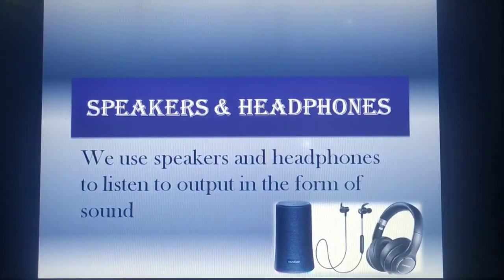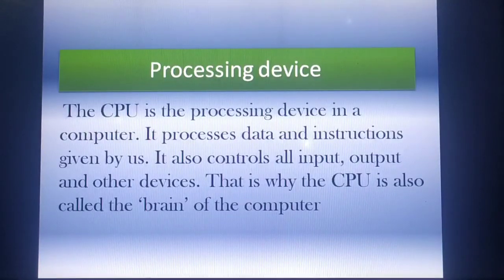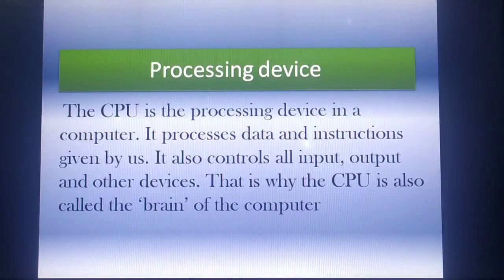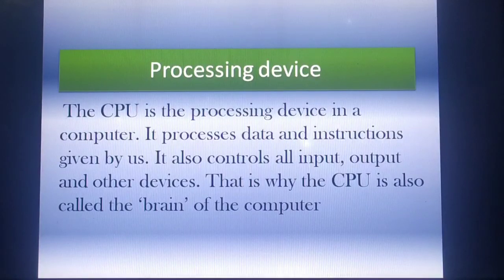Our next category of device is the processing device. The CPU, which means Central Processing Unit, is the processing device in a computer. It processes data and instructions given by us, and it also controls all input, output, and other devices. That is why the CPU is called the brain of the computer.